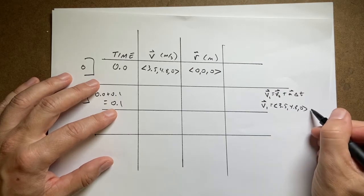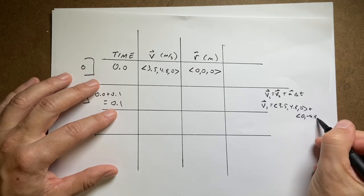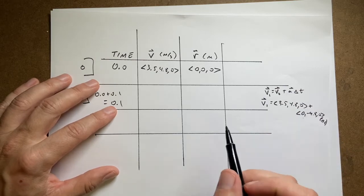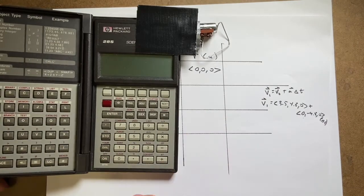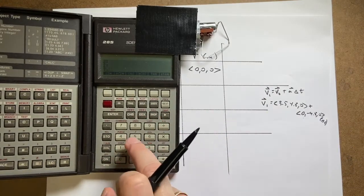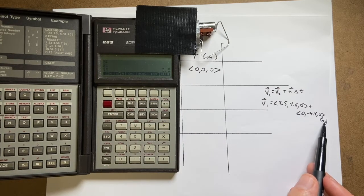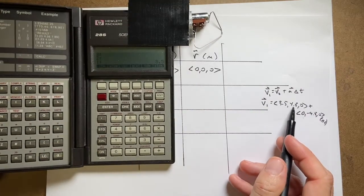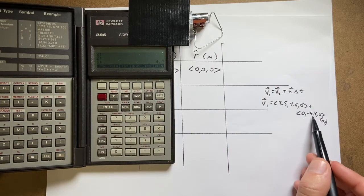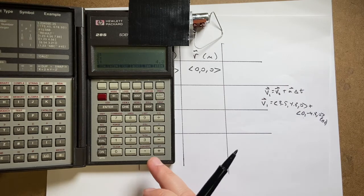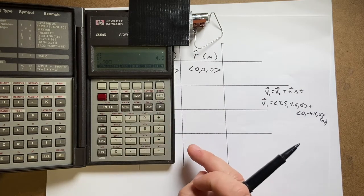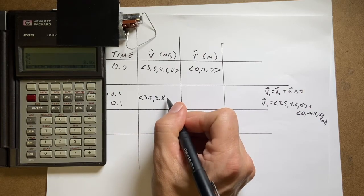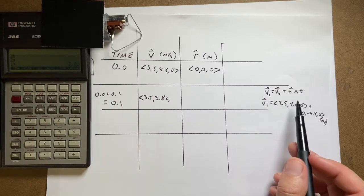Computing the x component: 3.5 + 0 * 0.1 = 3.5. For the y component: 4.8 + (-9.8 * 0.1) = 4.8 - 0.98 = 3.82. The z component is 0 + 0 = 0. So v1 = (3.5, 3.82, 0) meters per second.